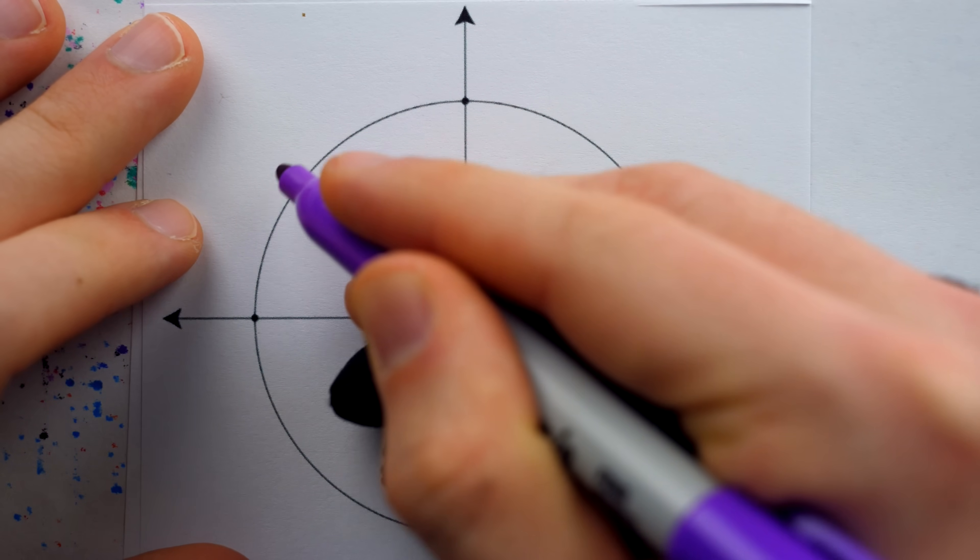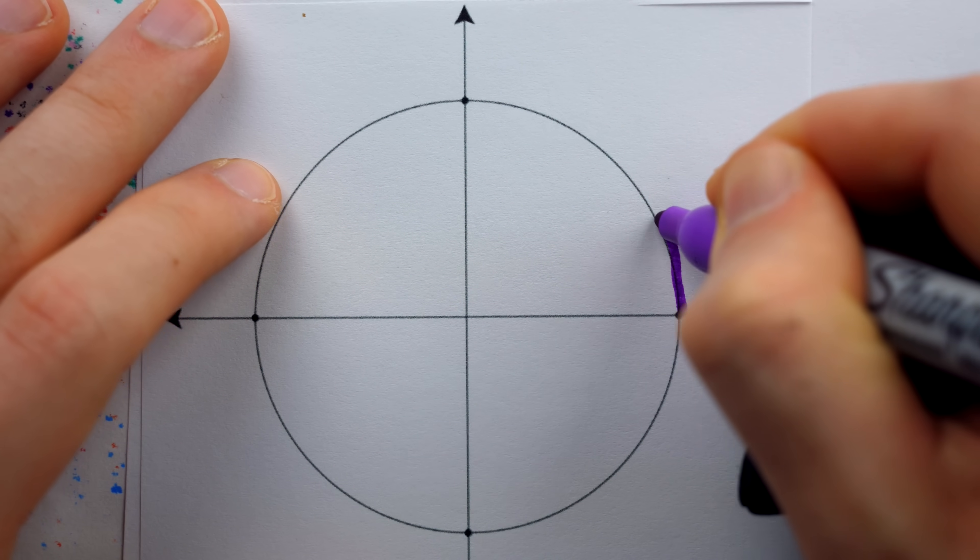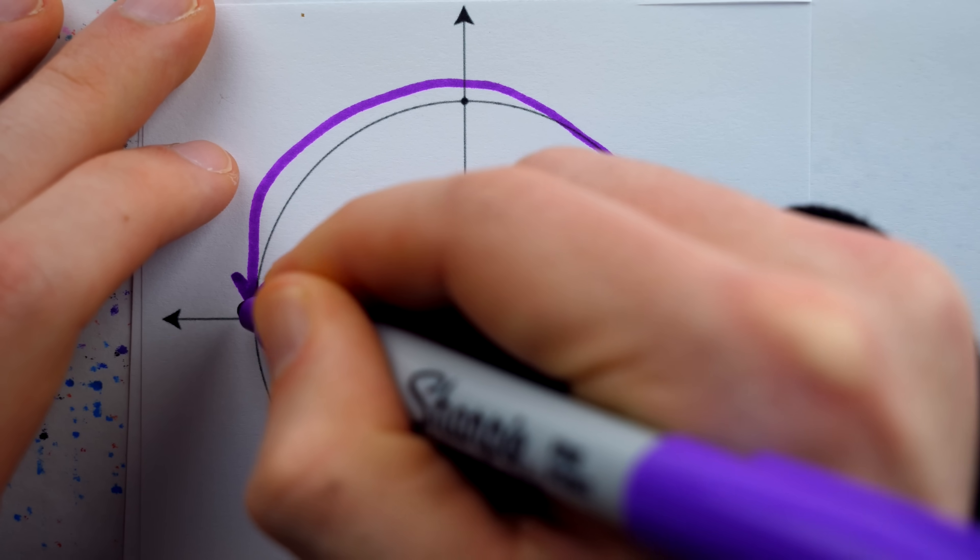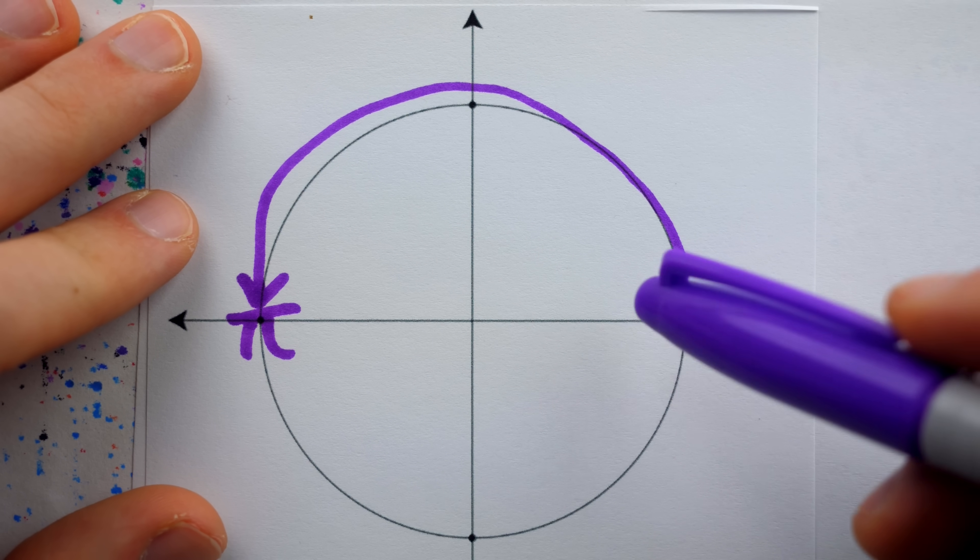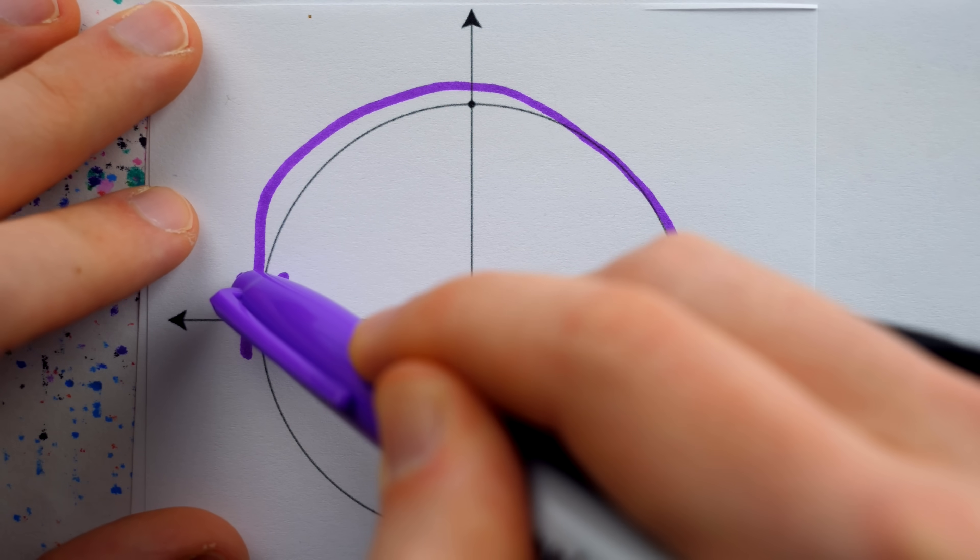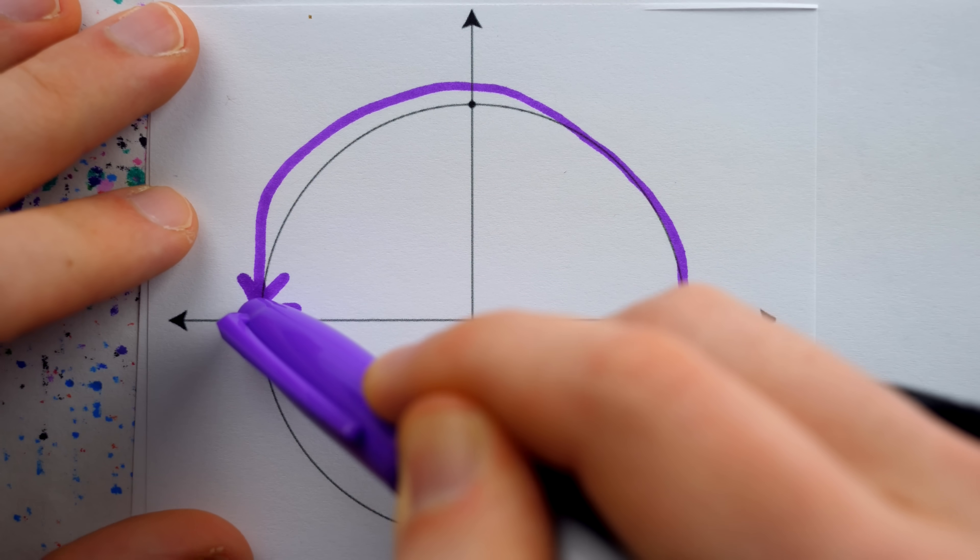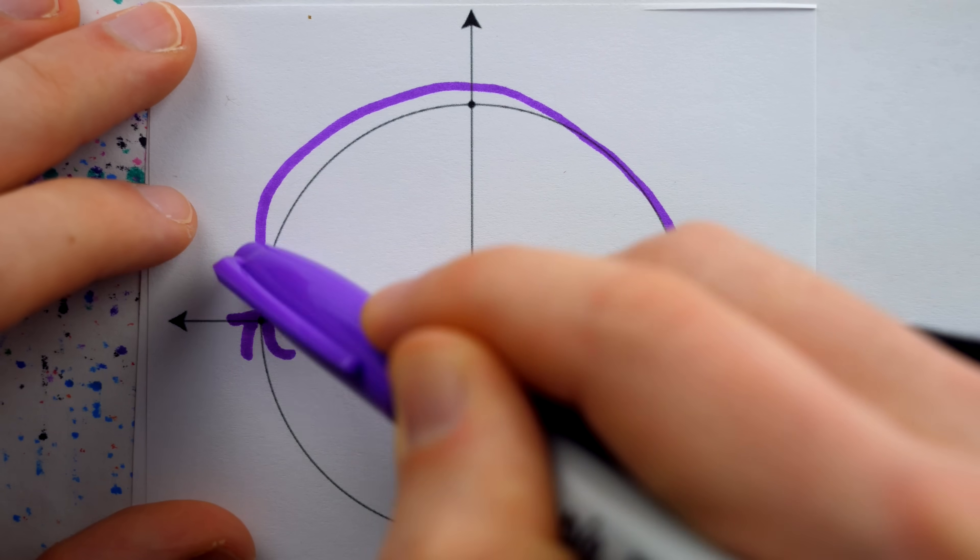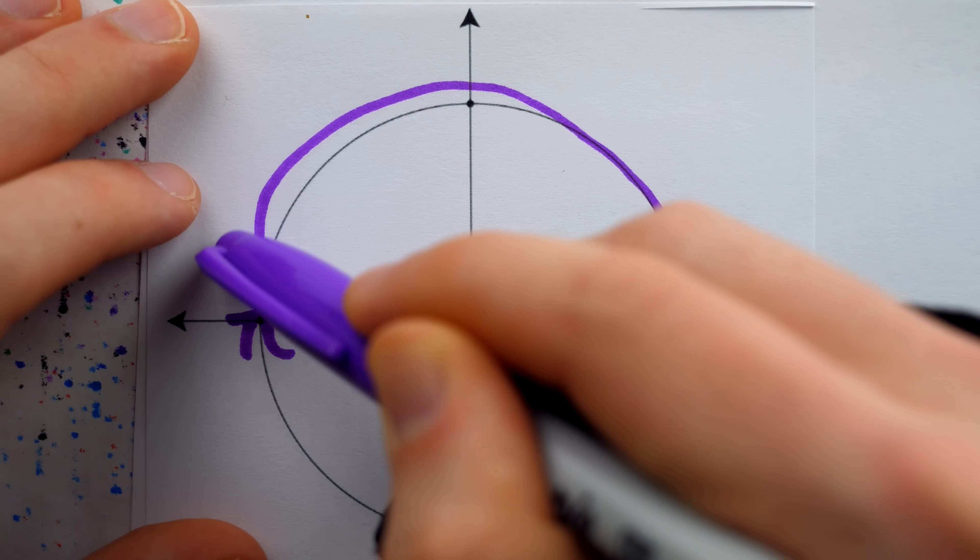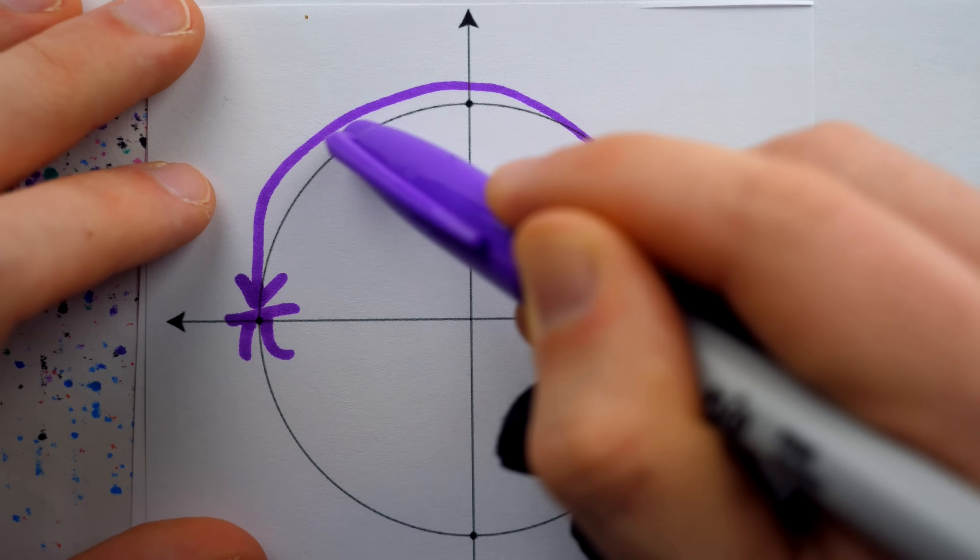And since all the way around the circle is two pi radians, halfway around is one pi. We could spin around in increments of pi: pi, two pi, three pi, four pi, always landing on the x-axis, where sine is zero.